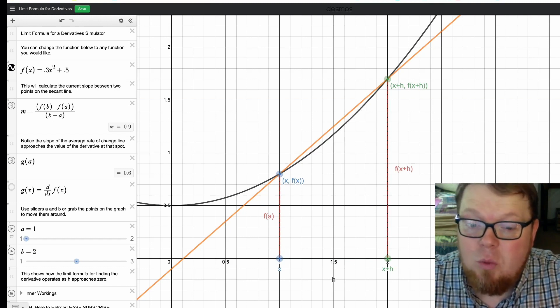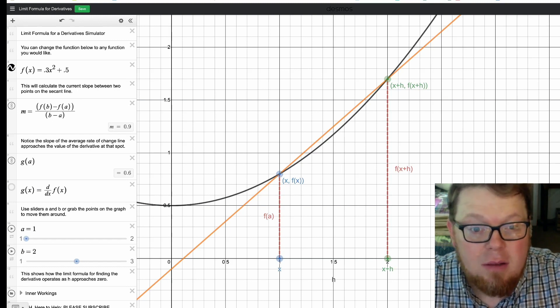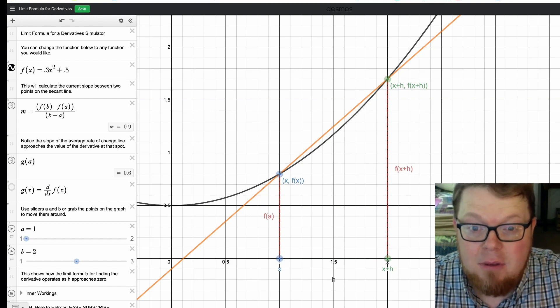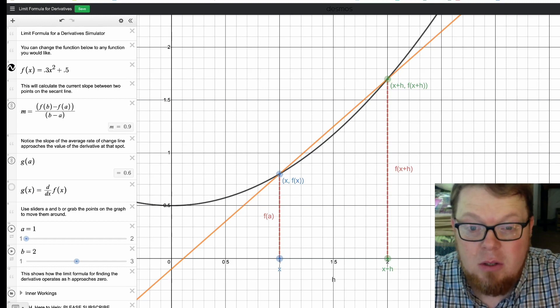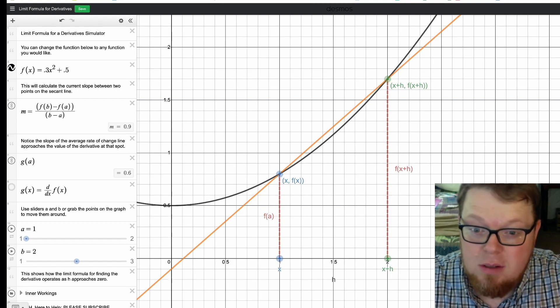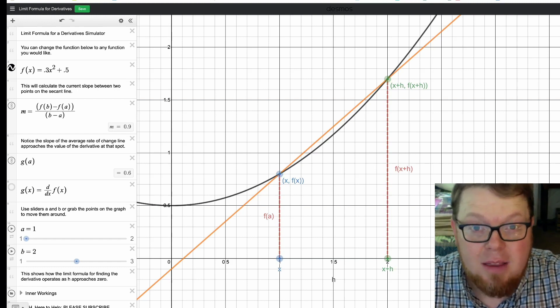And then you want to see that the slope of the line, the average rate of change line that goes between these two points, you want to see that that slope approaches the value of the derivative at that specific point.